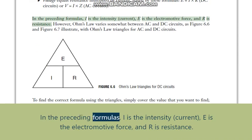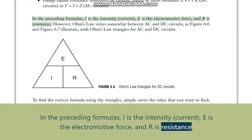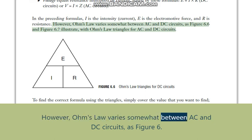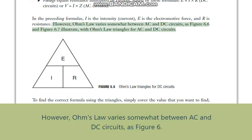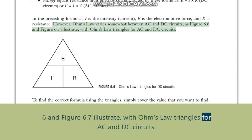In the preceding formulas, I is the intensity (current), E is the electromotive force, and R is resistance. However, Ohm's law varies somewhat between AC and DC circuits, as figure 6.6 and figure 6.7 illustrate, with Ohm's law triangles for AC and DC circuits.